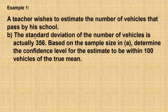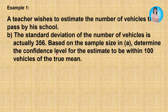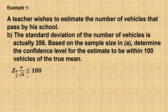Question B: the standard deviation of the number of vehicles is actually 356. Based on the sample size in part A, determine the confidence level for the estimate to be within 100 vehicles of the true mean. Given that the estimation error is less than or equal to 100, with the actual standard deviation 356 and sample size 40.